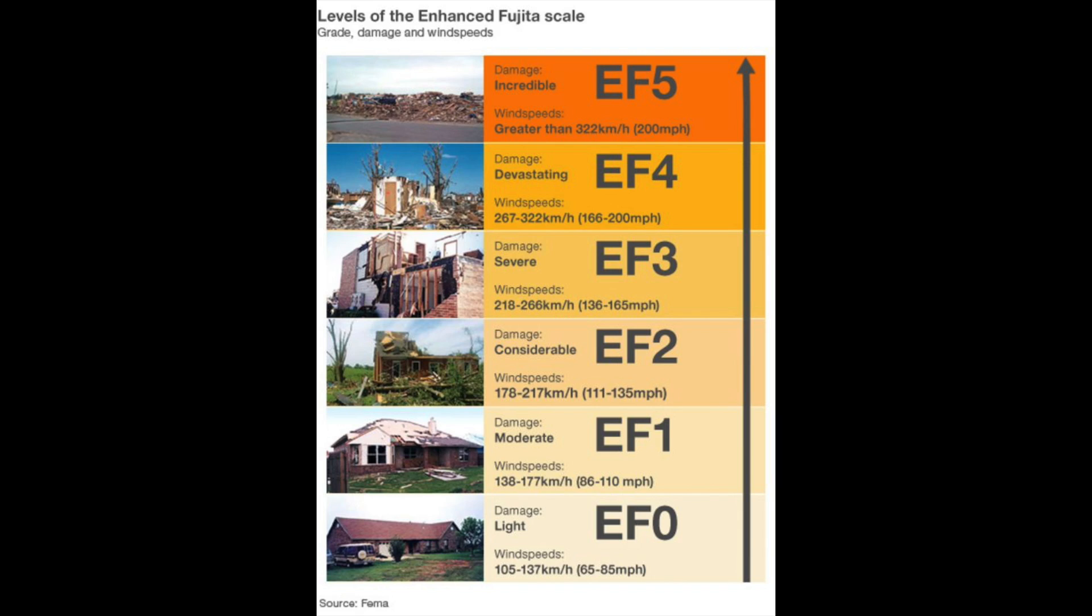Here are the way the tornadoes are ranked: EF0 to EF5. California, where I'm at, is EF0.